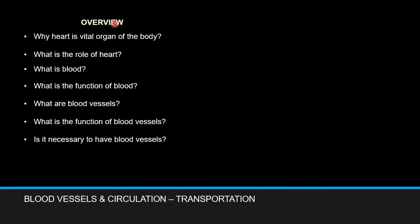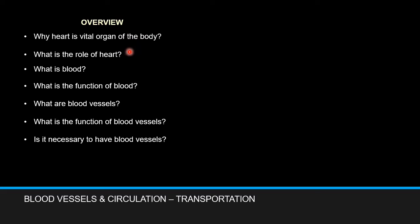Overview of the subject: why is the heart a vital organ of the body? What is the role of the heart? What is blood? What is the function of blood? What are the blood vessels and what is their function? Is it necessary to have blood vessels? We have studied the first two topics in the previous class. Now we will be looking at the remaining topics which were not discussed earlier.